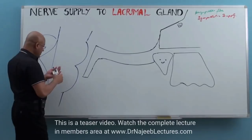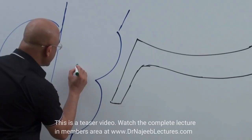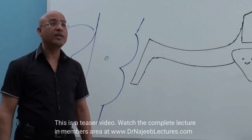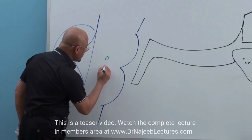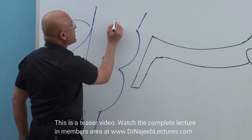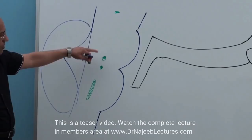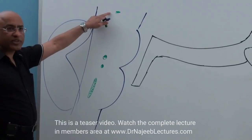Let us start with the parasympathetic supply. In the lower part of the pons — this is pons and here is medulla — in the lower part of the pons, in the tegmentum, there is a nucleus. This parasympathetic nucleus is called the superior salivatory nucleus. And under it here should be the inferior salivatory nucleus. Here it is: superior salivatory nucleus. And within this parasympathetic column, of course, here is the Edinger-Westphal nucleus, and below it is the dorsal nucleus of vagus in the brain stem. These are parasympathetic nuclei and they are paired.